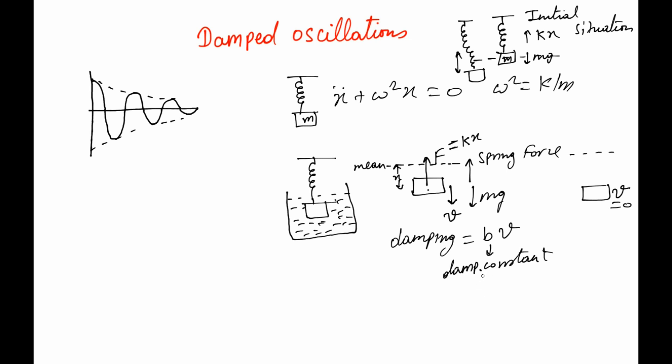The damping constant bv is going to act in the opposite direction of motion because the job of damping is to slow down the motion. If you rewrite this equation which we started by writing mx'' + kx = 0, Newton's law, then you have to write mx'' + bv + kx = 0.